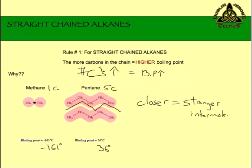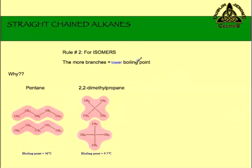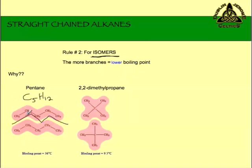That's rule number one. The second rule has to do with branches. More carbons means higher boiling point for straight chains. But if we have branches and we have isomers — same formula, different arrangement — the more branches, the lower the boiling point. Same idea: how close can the molecules get? Everywhere they touch, there's an intermolecular force. Pentane (C5H12) — the molecules touch all along the chain, they can get really close together, and there are intermolecular forces all along there.